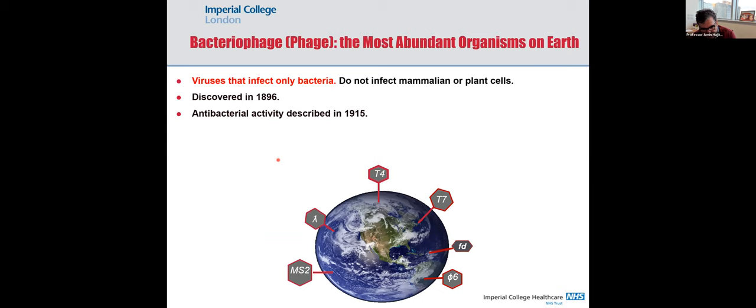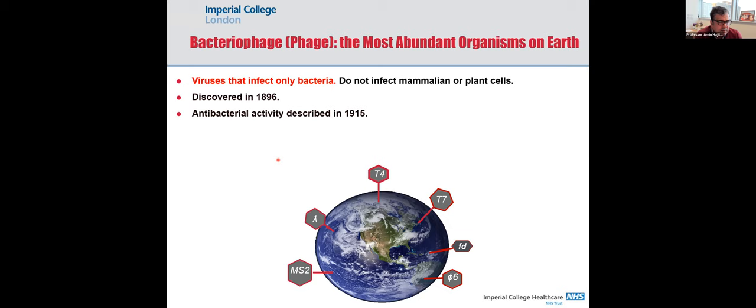What we decided to do during my postdoctoral training was to turn to bacteriophages, as I was working in a phage display technology lab. Bacteriophages are bacteria viruses — they don't infect human or plant cells. That's what attracted me: if you deliver them systemically, they shouldn't infect human or healthy tissues. They were discovered in 1896, and in 1915 it was found that phages kill bacteria. They are the most abundant organisms on earth.